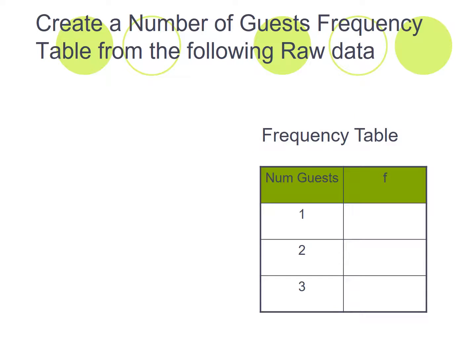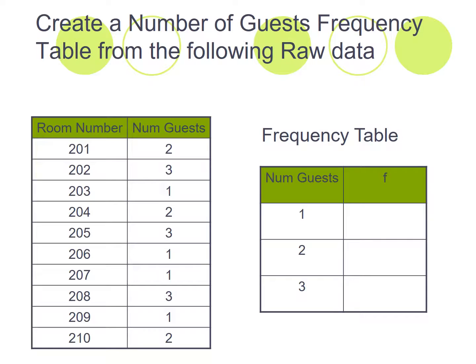Okay, creating a frequency table from the following raw data. So in this case here we have different rooms in a hotel. Room number 201, room number 202, room number 203. In room number 201 there were two guests. In room number 202 there were three guests. In room number 203 there was one guest. In room number 204 there was two guests. Room number 205 there were three guests. So what we're going to do is create a simple frequency table showing how many rooms had one guest in them, how many rooms had two guests in them, how many rooms had three guests in them.